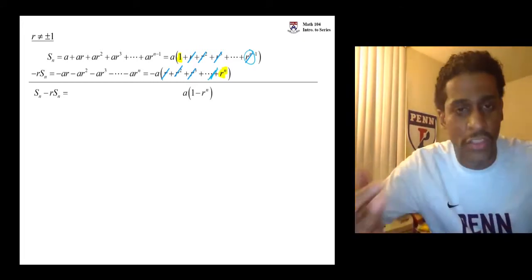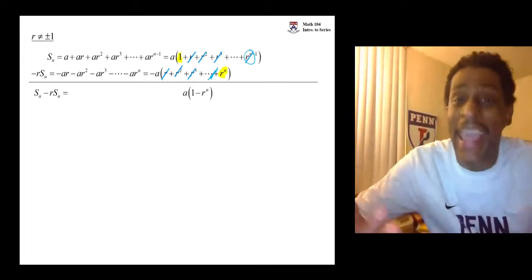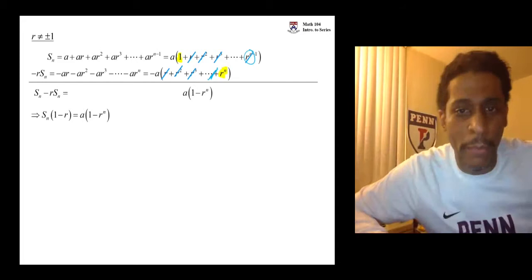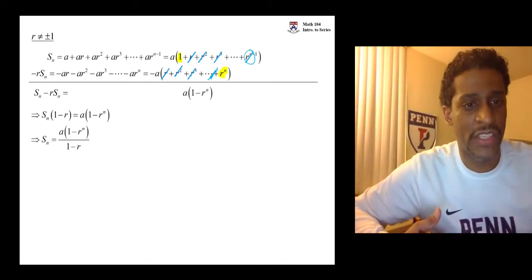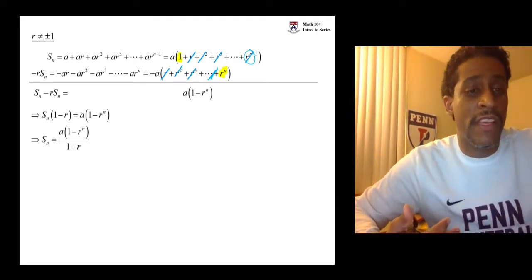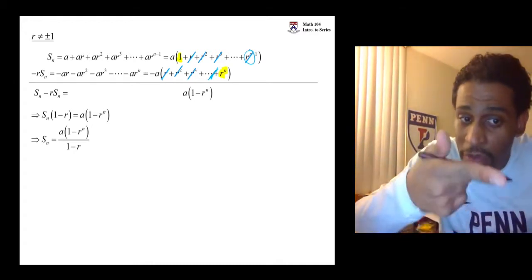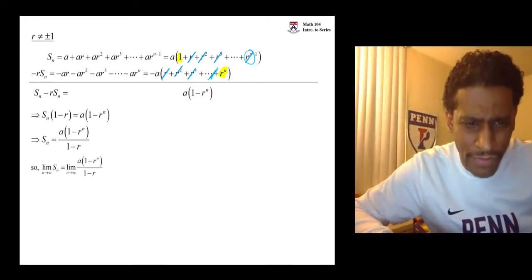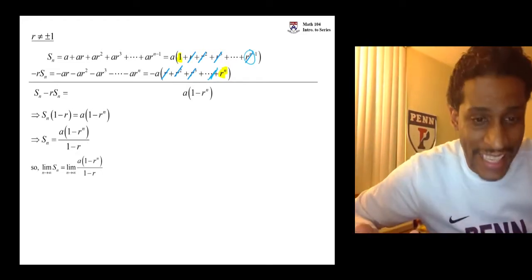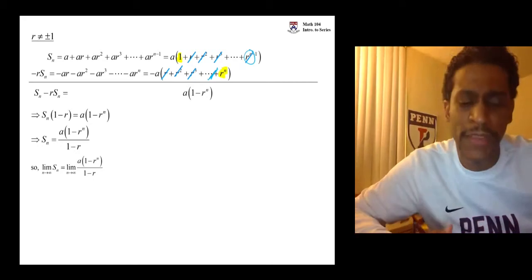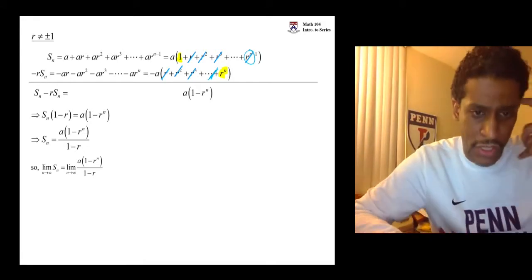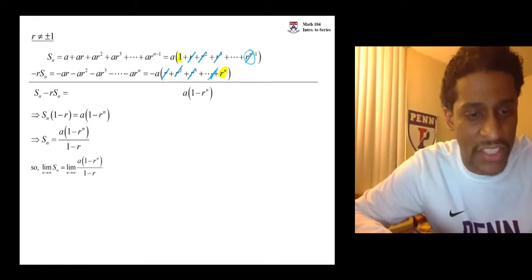So we're going to factor out the S sub N and divide by the 1 minus R. And we have an expression now that represents the Nth partial sum. Why are we doing this? Why do we care? Well, if there is a sum, the sum is equal to the limit as N goes to infinity on S sub N. And so, if this limit exists, then that's going to be what your sum is. If this limit doesn't exist, if this limit is infinite, then the series will diverge. But if this limit exists, the series will converge and we know what the sum of the series is.